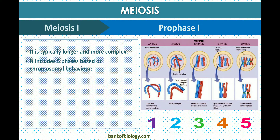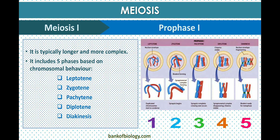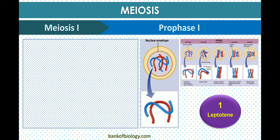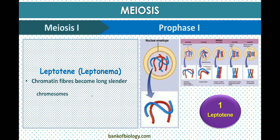The five sub-stages of prophase one are: first, leptotene; second, zygotene; third, pachytene; fourth, diplotene; and fifth, diakinesis. In leptotene — also called leptonema — chromatin fibers become long, thin chromosomes and the nucleus enlarges.